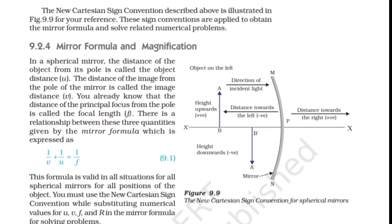Mirror Formula and Magnification: In a spherical mirror, the distance of the object from its pole is called the object distance U. The distance of the image from the pole is called the image distance V. The distance of the principal focus from the pole is the focal length F. There is a relationship between these three quantities given by the mirror formula: 1/V + 1/U = 1/F. This formula is valid for all spherical mirrors and all positions of the object. You must use the new Cartesian sign convention while substituting numerical values for U, V, F in the mirror formula.